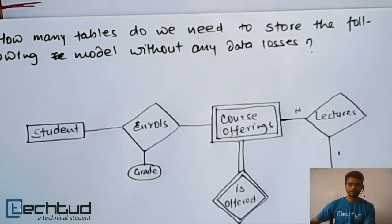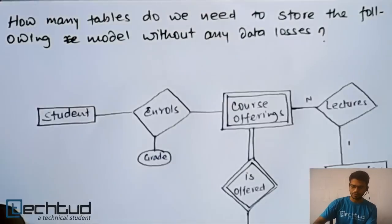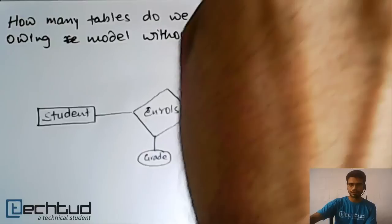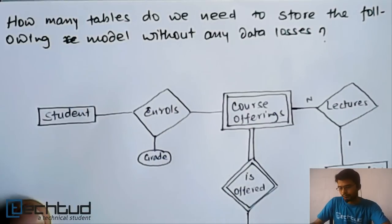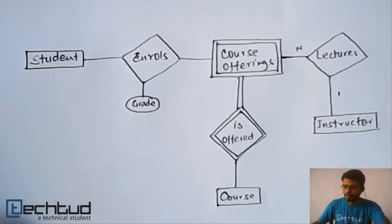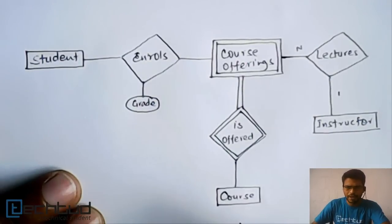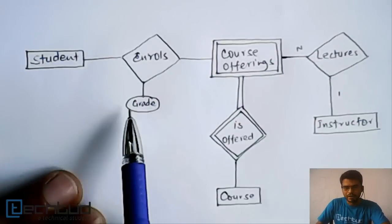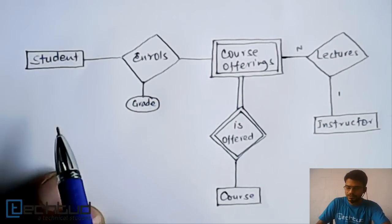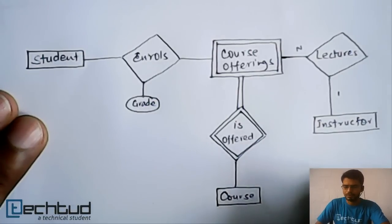Here is the question we will be solving — I have tried to incorporate all the possibilities. The question is: how many tables do we need to store the following model without any data loss? This is the model. I haven't written any attributes to keep the diagram neat, but entities will have attributes including key attributes. This relationship has one attribute which I have shown.